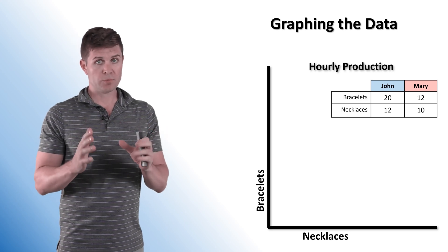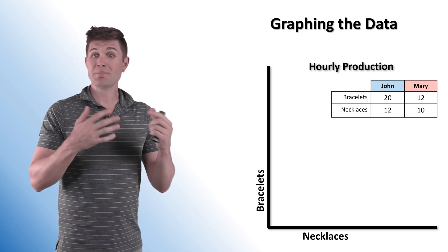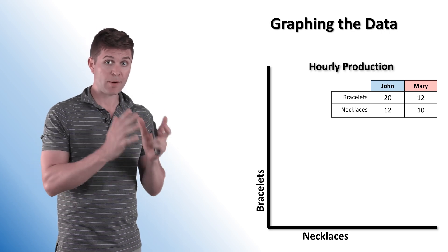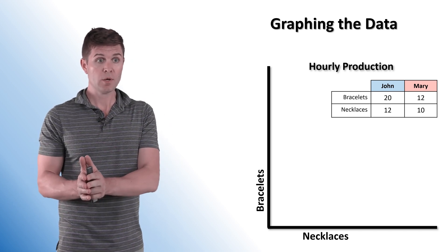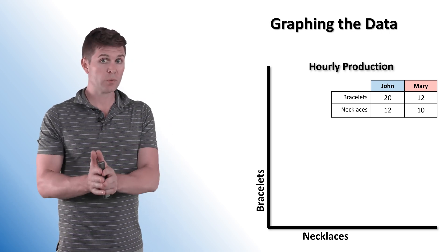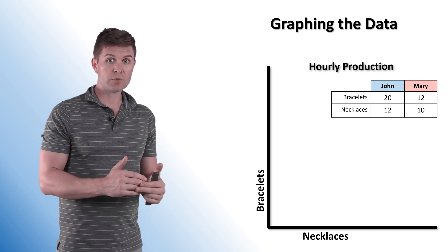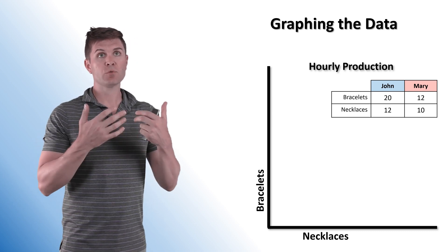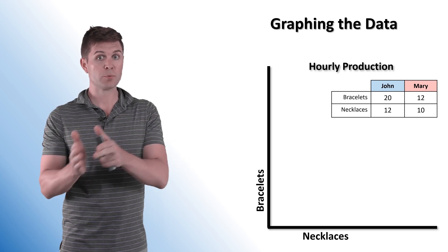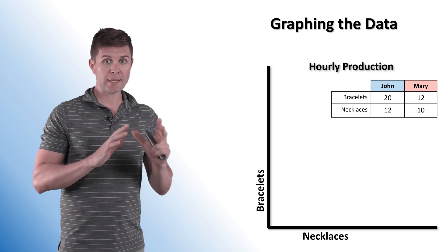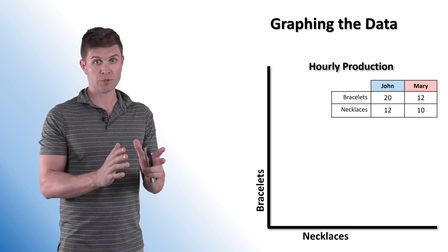When given production data, you are given one of two things. You're either given the hourly, daily, or monthly production — how many units you are actually producing in a given set of time or with so many resources. Or you are given examples where it's resources to produce; maybe it's three minutes to produce one good. We're going to look at examples of each one, starting with the hourly production.